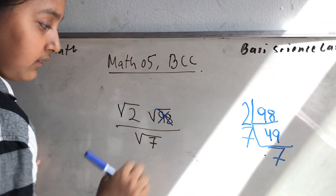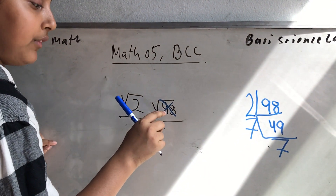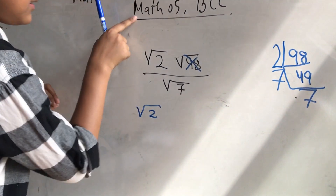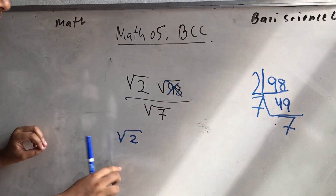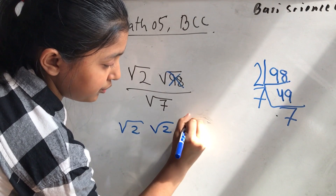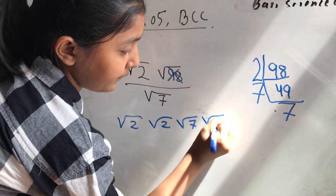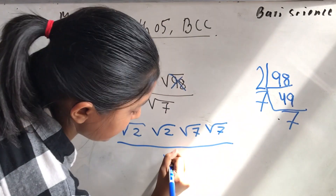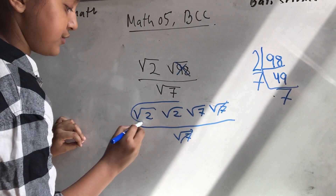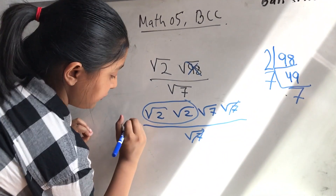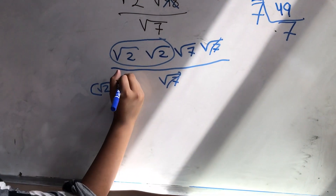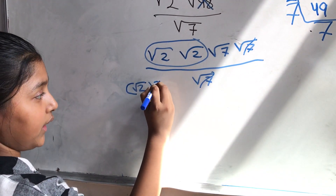Then I cross out 98 and replace it with the factors. So I have to do root 2 — I leave root 2 and root 7 alone. Now root 2, root 2, root 7, root 7 by root 7. You cross these out. And if you find there are 2 root 7's, then you cross out the squares and the roots.